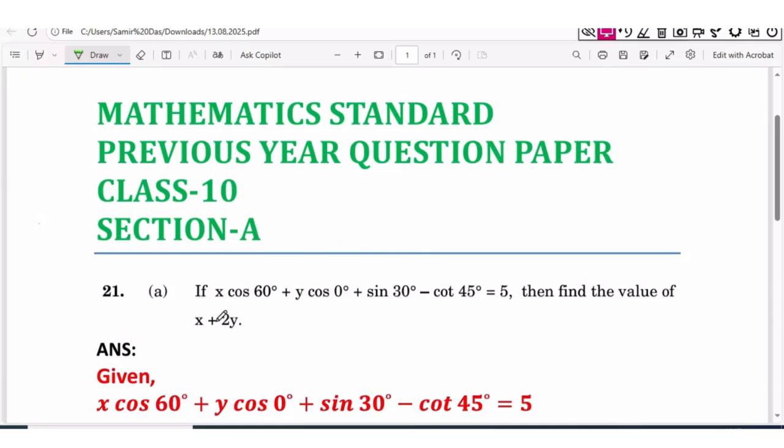Next question number 21a: If x cos 60° + y cos 0° + sin 30° - cot 45° = 5, then find the value of x + 2y. So here we have to find the value of x + 2y.